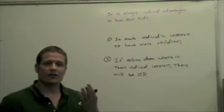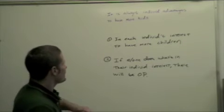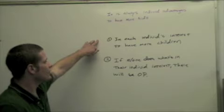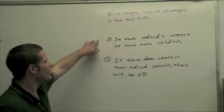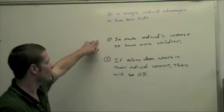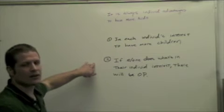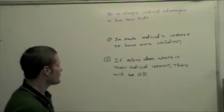Because here's a simple way to think about it. It's in each individual's interest to have more kids. But if everybody does what's in their individual interest, there will be overpopulation.